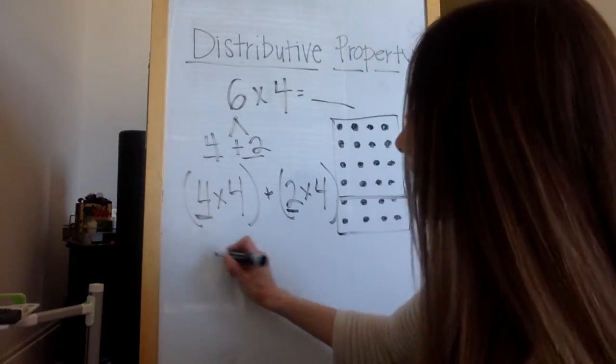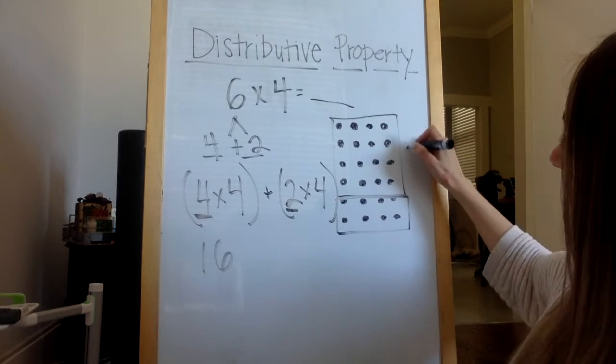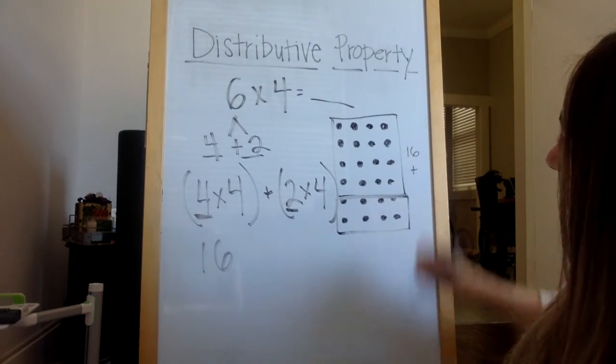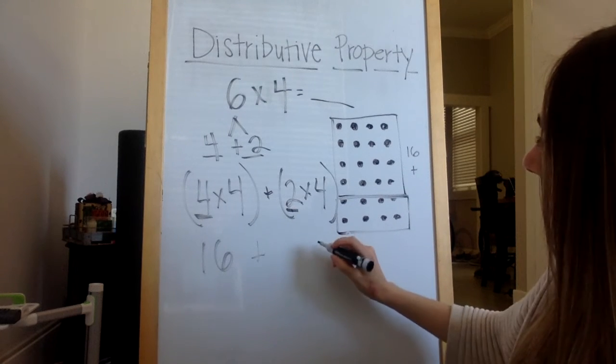So four times four is 16, and I know that there's four, eight, twelve, sixteen right here. Plus, two times four is eight.